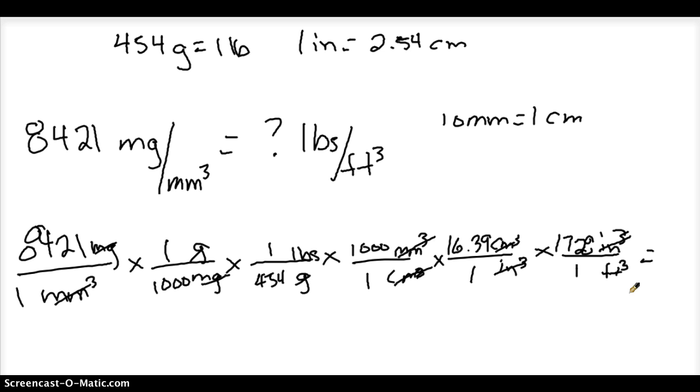So I'm going to multiply everything on top. So we have 8,421 times 1,000 times 16.39 and times 1,728 equals. Dividing on the bottom, we have 1,000 times 454, and we end up with 525327.95-ish, pounds per feet cubed.